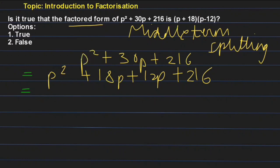So you can take p as common, so p and then (p + 18), right? And here you can take 12 as common, so +12 and (p + 18), right? Here you will get (p + 18).